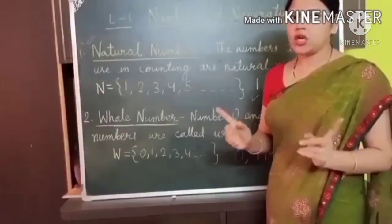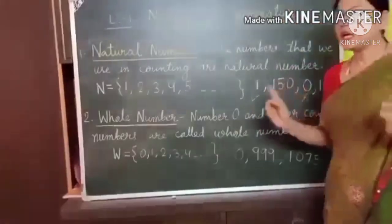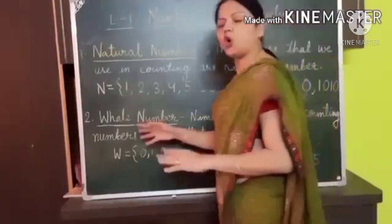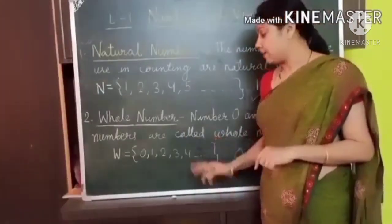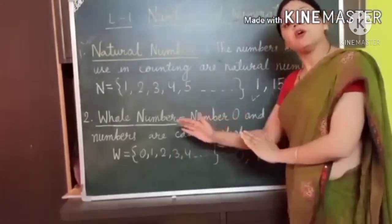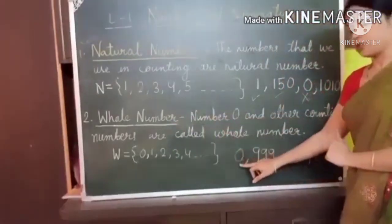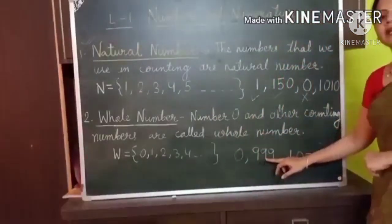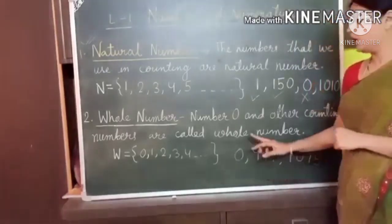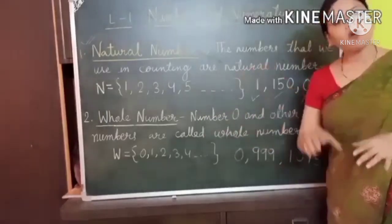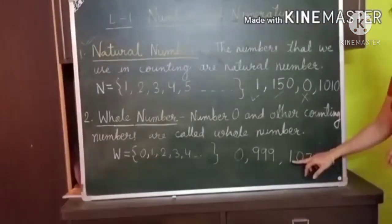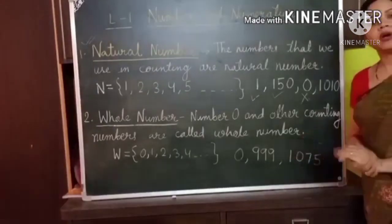Can we start our count with 0? No. So 0 is not a natural number. Similarly, 1010 is also a counting number. Now for whole number — is 0 a whole number? Yes, because when we include 0 with natural numbers, it becomes a whole number. So 0 is also a whole number. Is 999 a whole number? Yes, definitely — it is also a whole number, because whole numbers contain 0 with counting numbers. Similarly, 1075 is also a whole number.